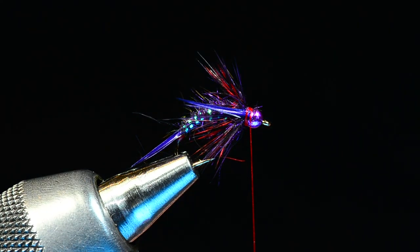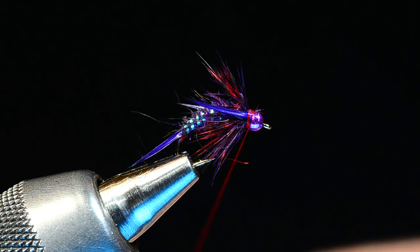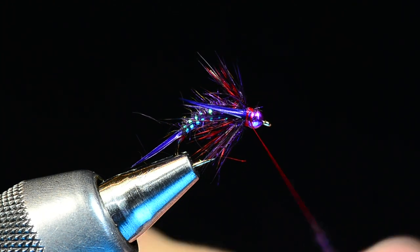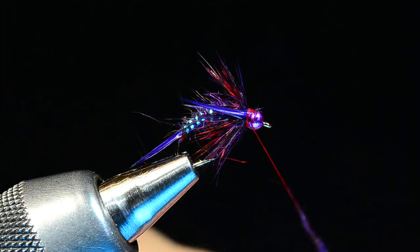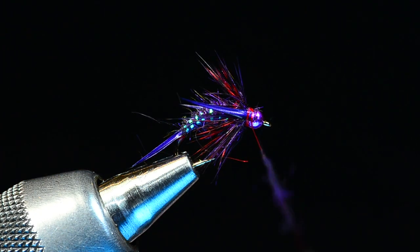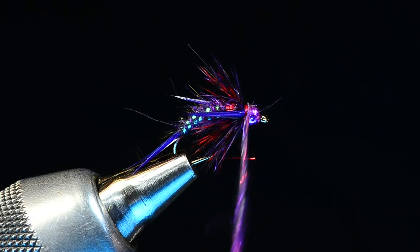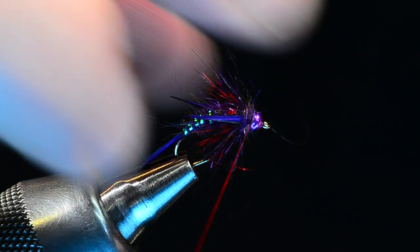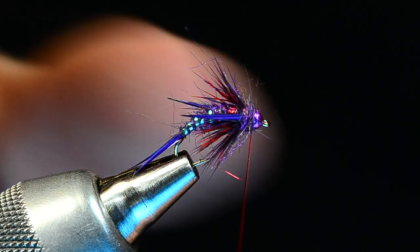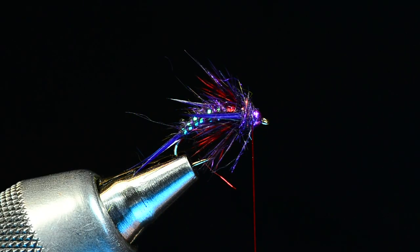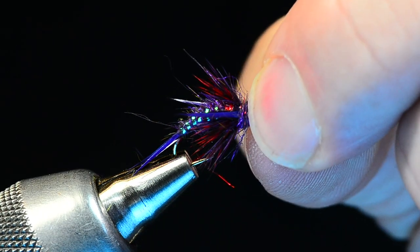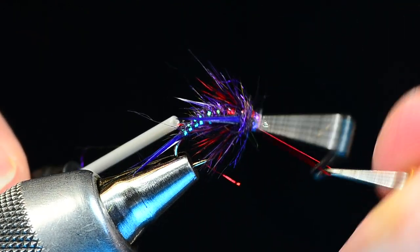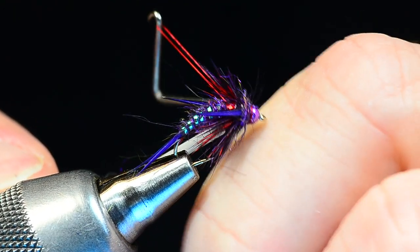And then our last step is just going to be a little tiny pinch of that same dubbing to build our collar behind the bead. I like to overdo this just a slight amount because I'm going to brush it out. So I'm just using this to cover that thread collar. And I'll whip finish my thread and let it slide off the back edge of that purple bead and tuck in underneath that dubbing.